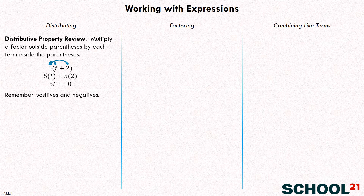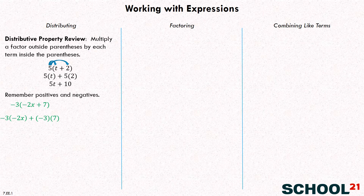Let's try another example. In this one, we have to remember that there are positives and negatives. We have negative three times the quantity negative two X plus seven, and we're going to go ahead and distribute. That negative three is multiplying by the first term, which is negative two X, and then multiplying by the next term, which is seven. The really critical thing is that we're putting a plus sign in between, because there was a plus sign above, and we carry that plus sign through.